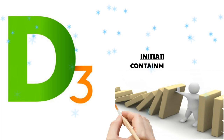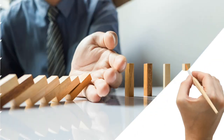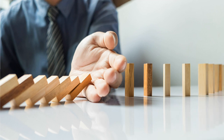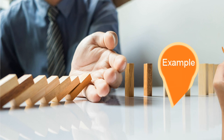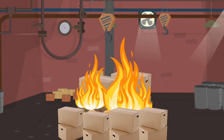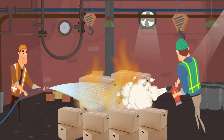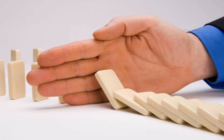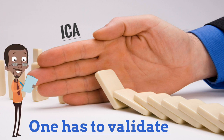Now we look at D3 — initiate interim containment actions. Before we look for a permanent solution, we have to put interim containment action in place so that the loss will stop immediately. For example, if there is a fire, you first put out the fire before investigating the reason for it. Once the ICA is in place, one needs to validate whether it is working and whether the problem has stopped.